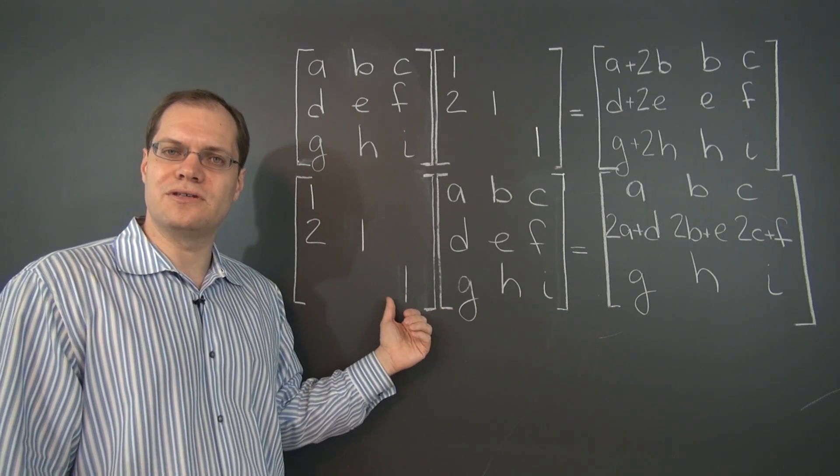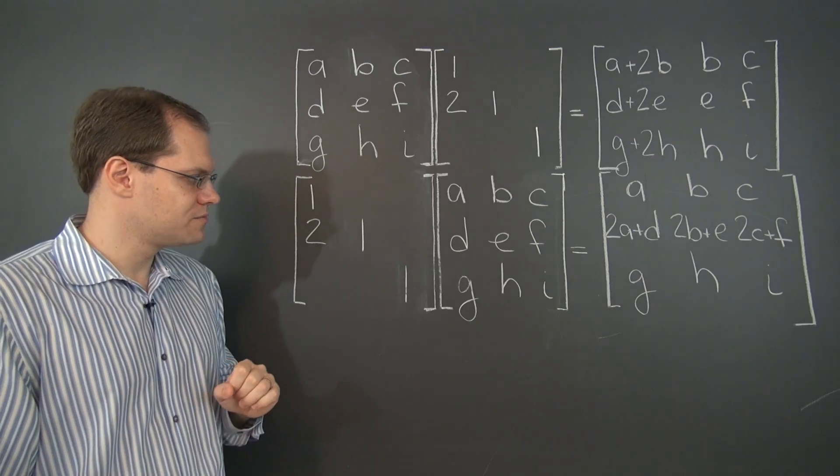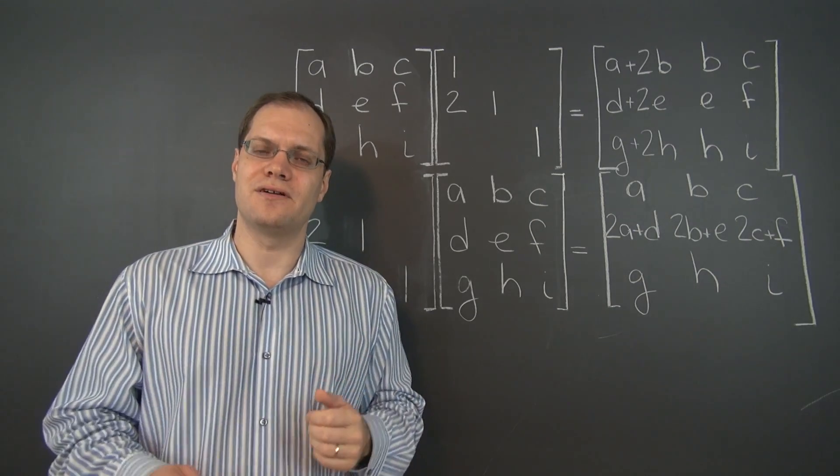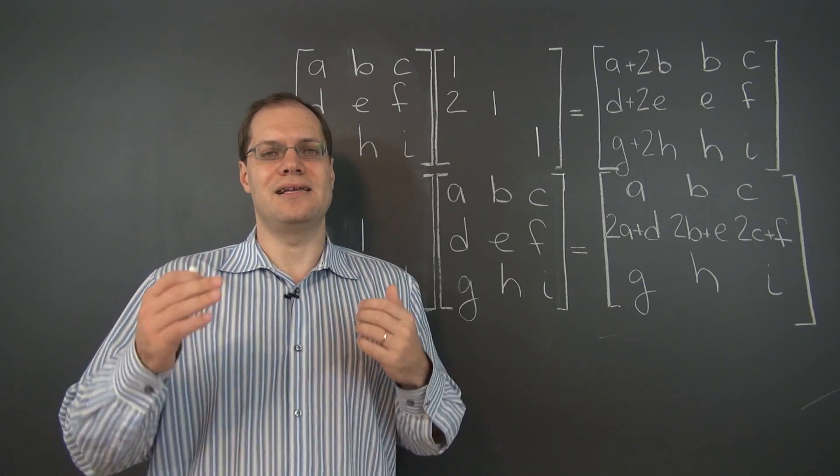Same thing here when it appears on the left, except replace the word columns with the word rows. So we have now discovered the effect that elementary matrices have on other matrices and a matrix product.